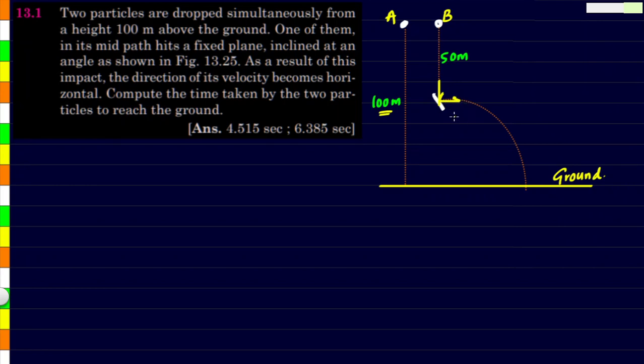Technically, what is happening here is that its vertical component of velocity is becoming zero, so it will get reset at this particular point. We need to find the total time taken by object B in two phases.